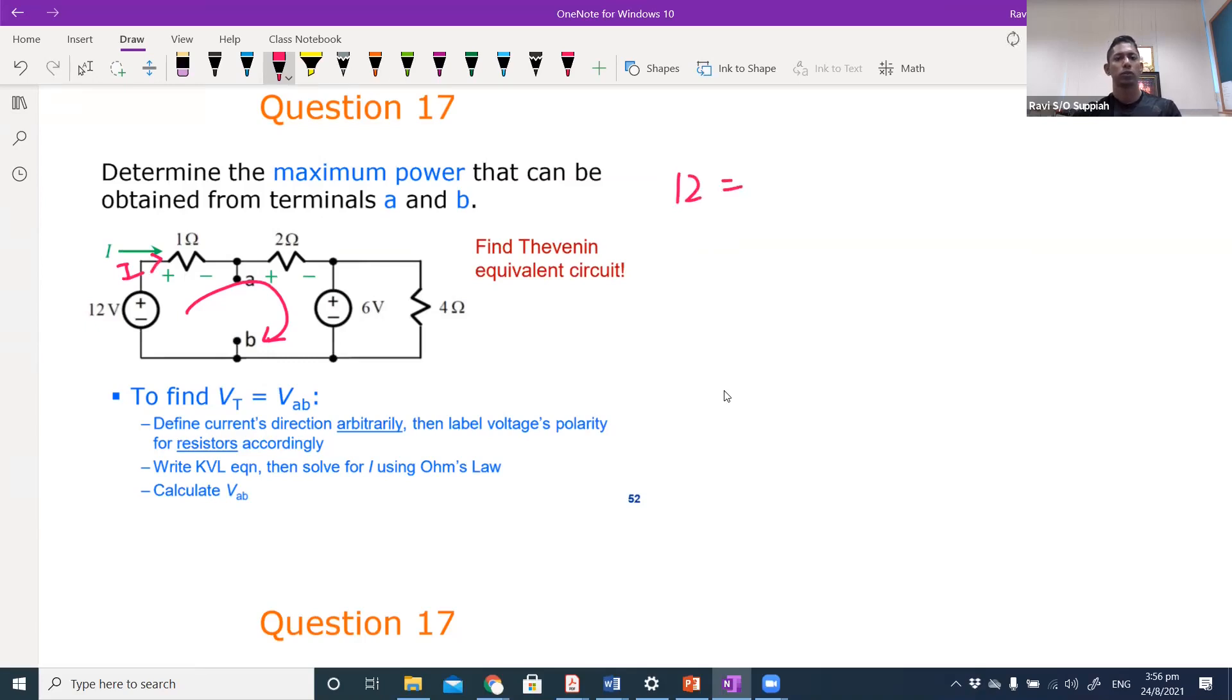12 volts - if I draw the loop, the plus is in line with the loop, whereas the 1 ohm, 2 ohm, and 6 volts is against the loop. In that case, I can say that i multiplied by 1 plus 2, plus 6. This is the voltage drop in the opposite direction. So 12 volts, the current is going out of the positive; the 1 ohm, 2 ohm, and 6 volts, the current is going into the positive. Whatever is going out of the positive equals whatever going into the positive - that is the KVL loop. From there you can solve for i, you get it as 2 amperes.